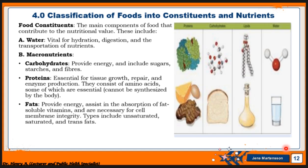We also have macronutrients — these are nutrients that are needed in large quantities, in bulk, for the system on a daily basis. Carbohydrates is one of the macronutrients; it provides energy and includes sugar, starch, and fiber. Proteins are essential for tissue growth, repair, and enzyme production, and they consist of amino acids, some of which are essential and cannot be synthesized by the body. These amino acids are key building blocks in your body system.